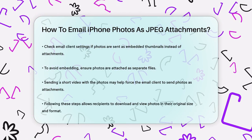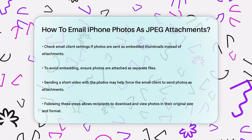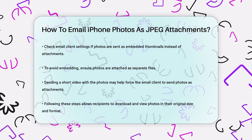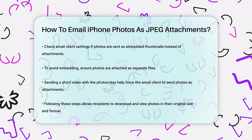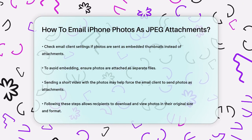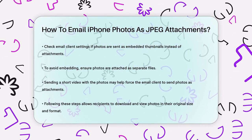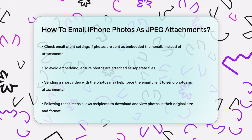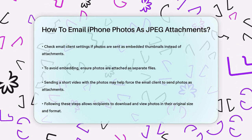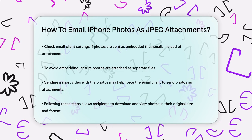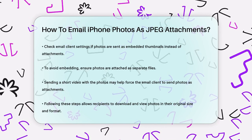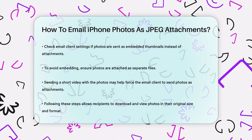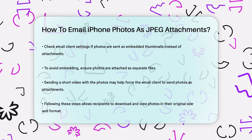Another trick is to try sending a short video along with the photos. Sometimes this can force the email client to send the photos as attachments rather than thumbnails. By following these steps, you can ensure that your iPhone photos are sent as JPEG attachments, making it easier for recipients to download and view them in their original size and format.